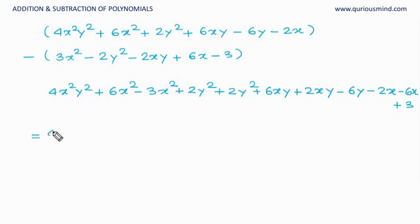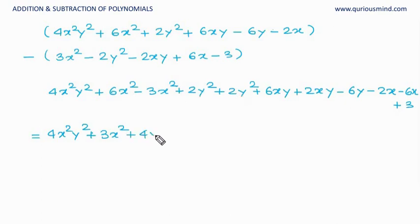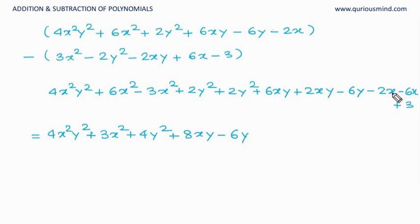Now we solve: 4x²y² remains as it is. 6x² minus 3x² gives plus 3x square. Plus 2y² plus 2y² gives plus 4y square. Plus 6xy plus 2xy gives plus 8xy. Minus 6y has nothing to add, so minus 6y. Minus 2x minus 6x — same signs means addition, 6 plus 2 is 8, sign of the greater is minus — so minus 8x. And plus 3. Our answer is the same. The method is different — follow the one you are comfortable with.